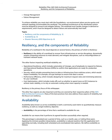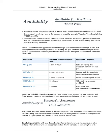We define availability as follows: Availability is a percentage uptime, such as 99.9%, over a period of time, commonly a month or year. Common shorthand refers only to the number of nines — for example, five nines translates to being 99.999% available. Some customers choose to exclude scheduled service downtime, for example planned maintenance, from the total time in the formula. However, this is not advised, as your users will likely want to use your service during these times.